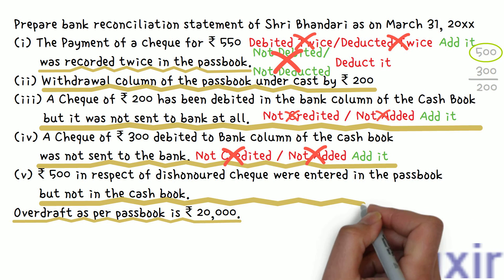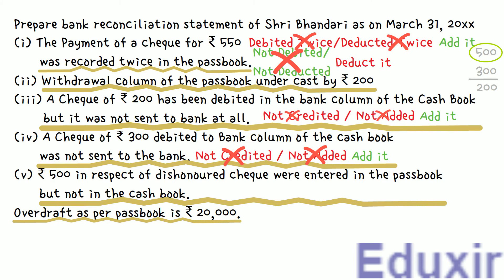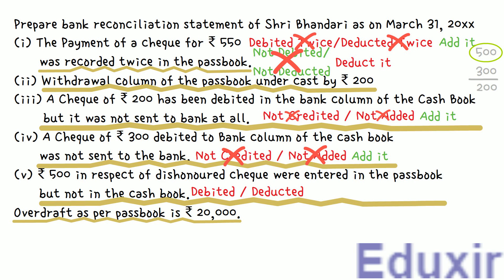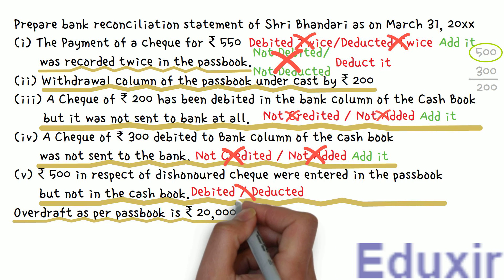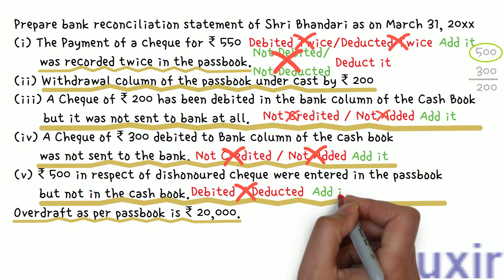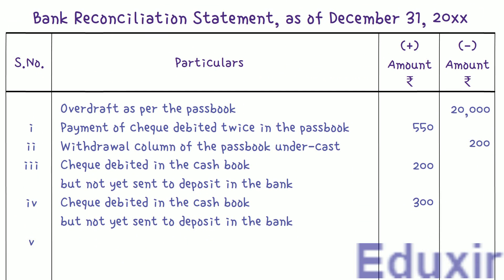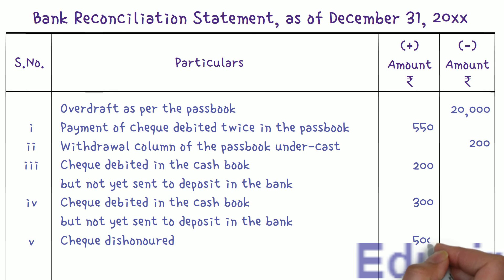Next, a cheque for 500 rupees was dishonored. As discussed in the recap, when this cheque is dishonored, it will be debited in the bank passbook. But the business does not know about this dishonored cheque until the bank statement is received, so this cheque amount will not be credited in the cashbook due to the timing difference. This causes a difference between the balances. We need to add this cheque amount to the passbook balance to get the business cashbook balance. Let us write the particulars as 'Cheque dishonored' and enter 500 rupees in the plus amount column.